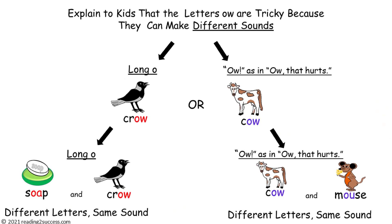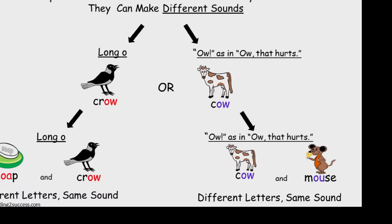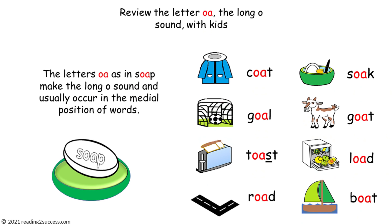Since kids are already familiar with the long O pattern made by the vowel team O-A, we're going to begin with a review of those words, and then introduce the O-W long O sound, as heard in Crow. Remind kids that the letters O-A together make the long O sound as in Soap, and then together read the words with them: coat, goal, toast, road, soak, goat, load, and boat.